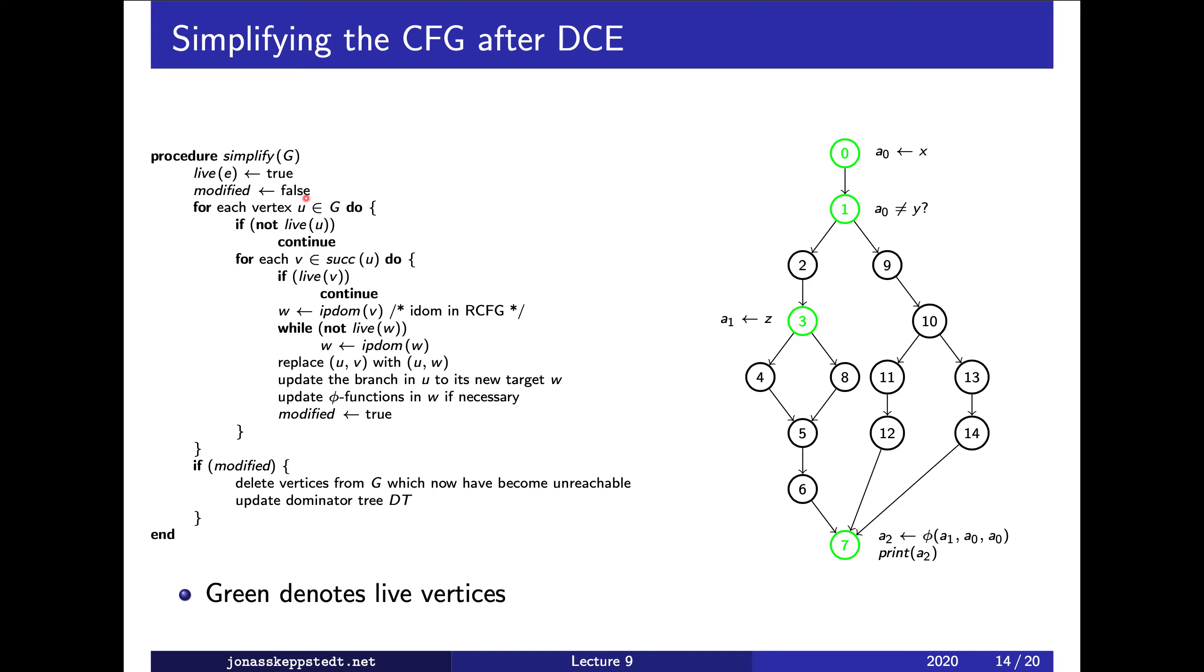Let's see what happens. We start with marking the exit vertex as live. Here it was already live since it should never be removed. We have a variable called modified which says we should update or recompute the dominator tree because we've changed the control flow graph. We go through one vertex at a time and check if it's not live; if so, we don't do anything. Otherwise, if it is live, we continue.